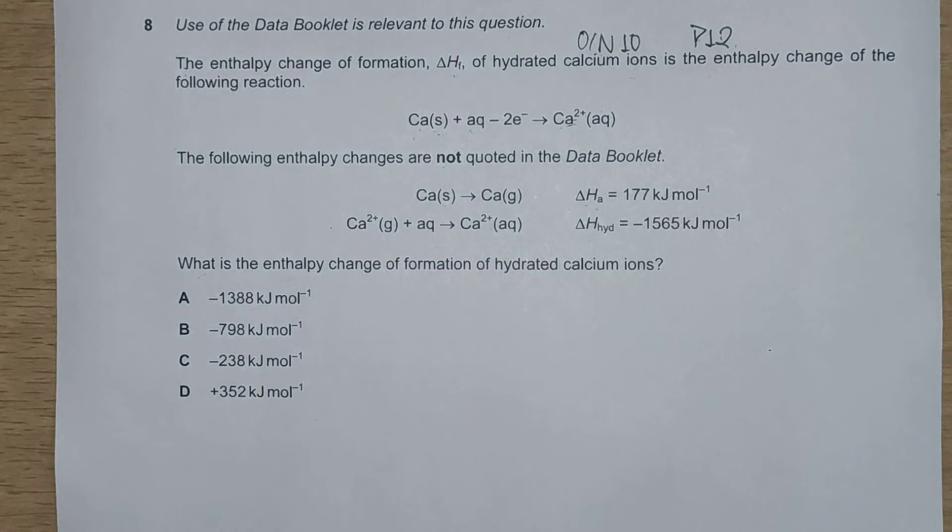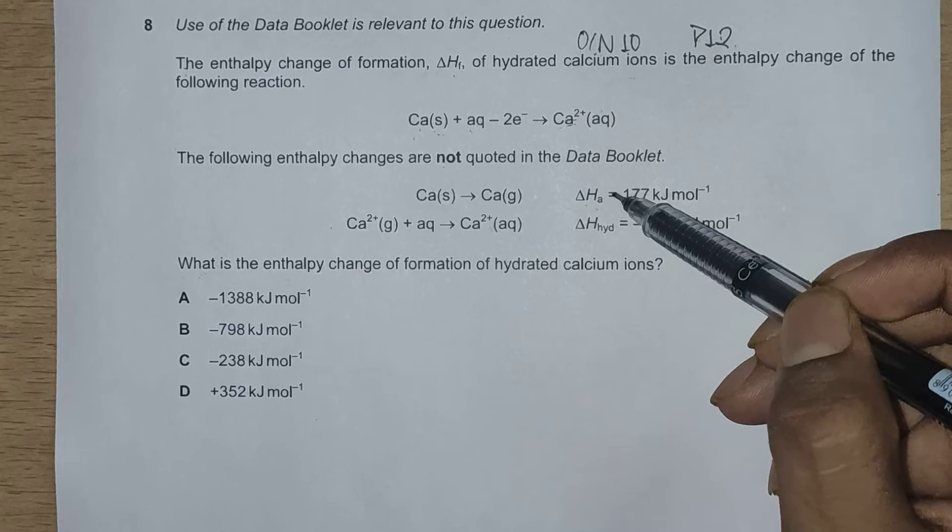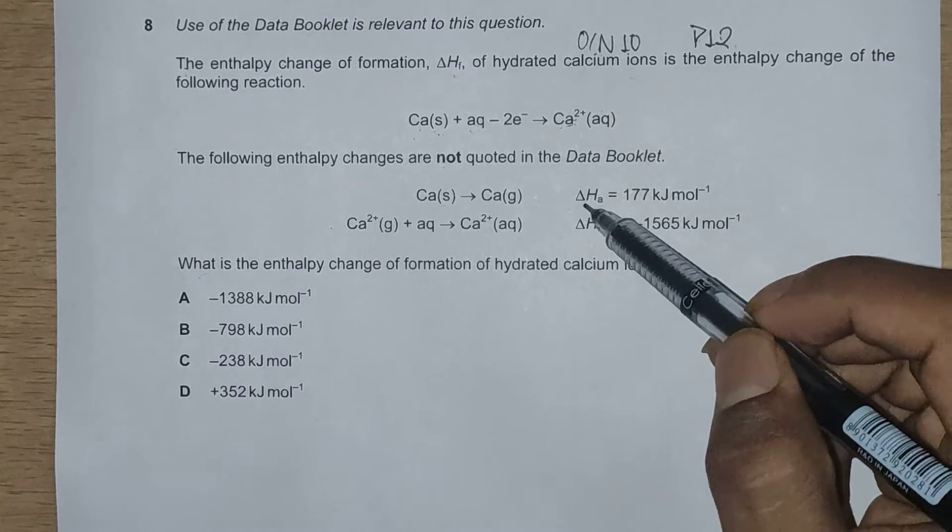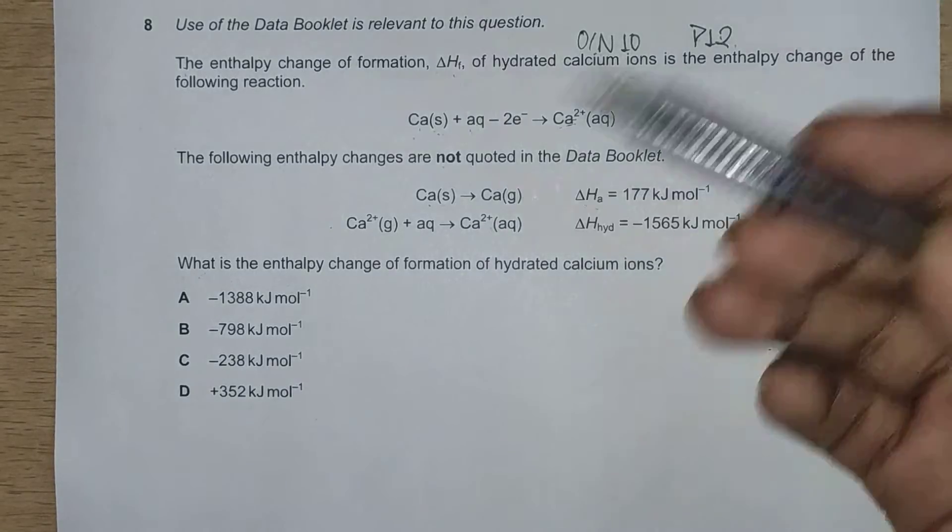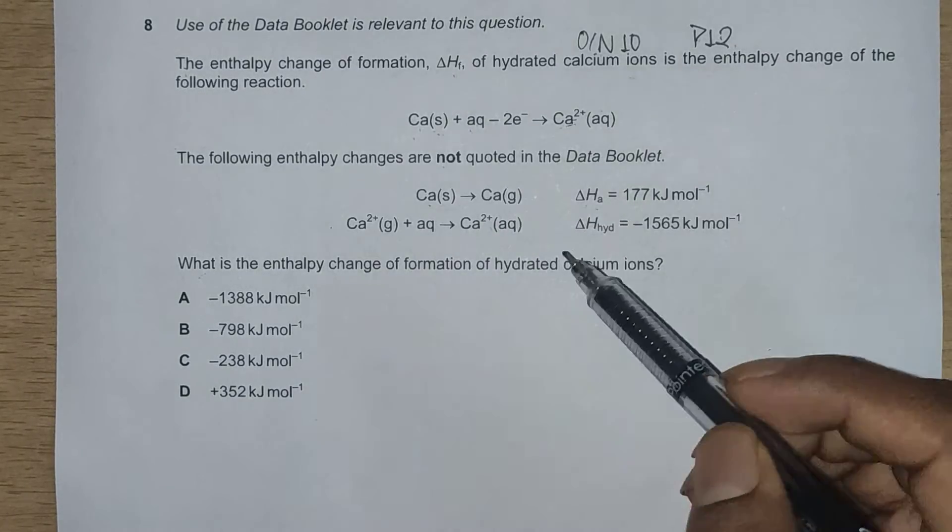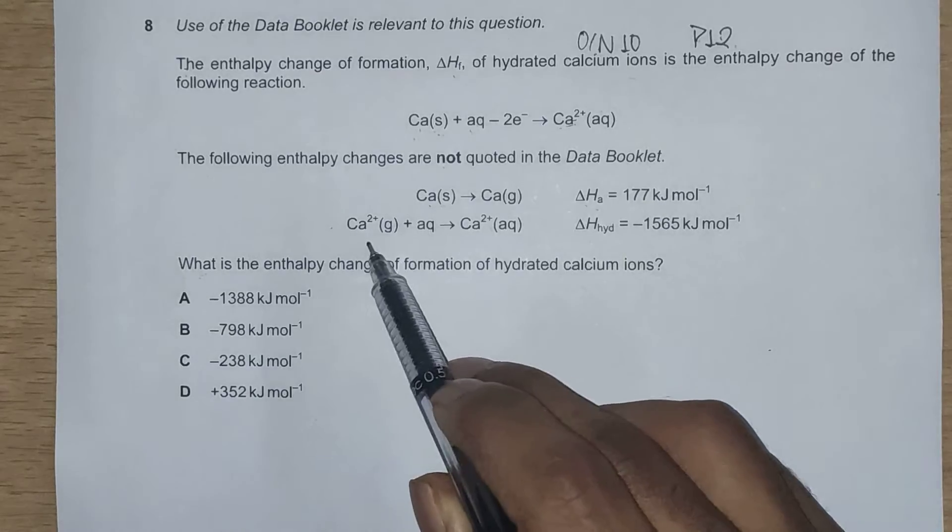The following enthalpy changes are not quoted in the Data Booklet, so we need to use the Data Booklet to solve the question. The two values we're given are: enthalpy change of atomization of calcium